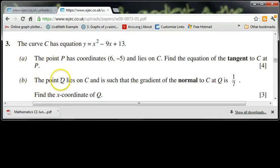Right, let's have a go at 3b. The point Q lies on C, the quadratic, here we are here, y equals x squared minus 9x plus 13, and is such that the gradient of the normal to C at Q is 1/7. Find the x-coordinate of Q.